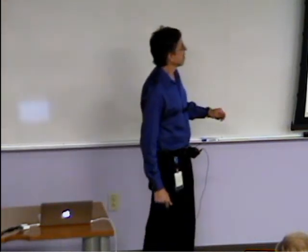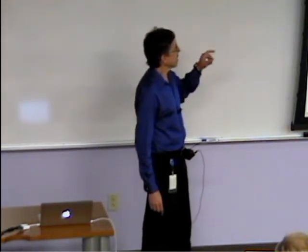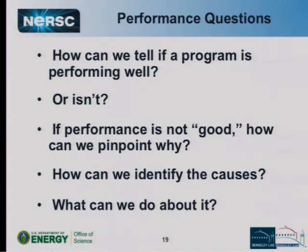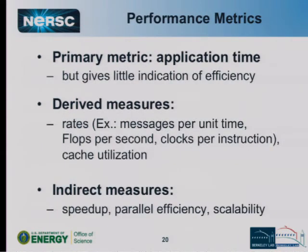Moving on to performance and optimization: the idea behind performance optimization is asking how we can tell if a program is performing well, and if it isn't, figuring out why and what to do about it. The one metric you ultimately care about is how long it takes for your code to run, but that doesn't tell you how efficiently you're using the hardware. You can keep optimizing but not know how good it could be. Useful derived measures include rates like messages per unit time, flops per second, and similar metrics.